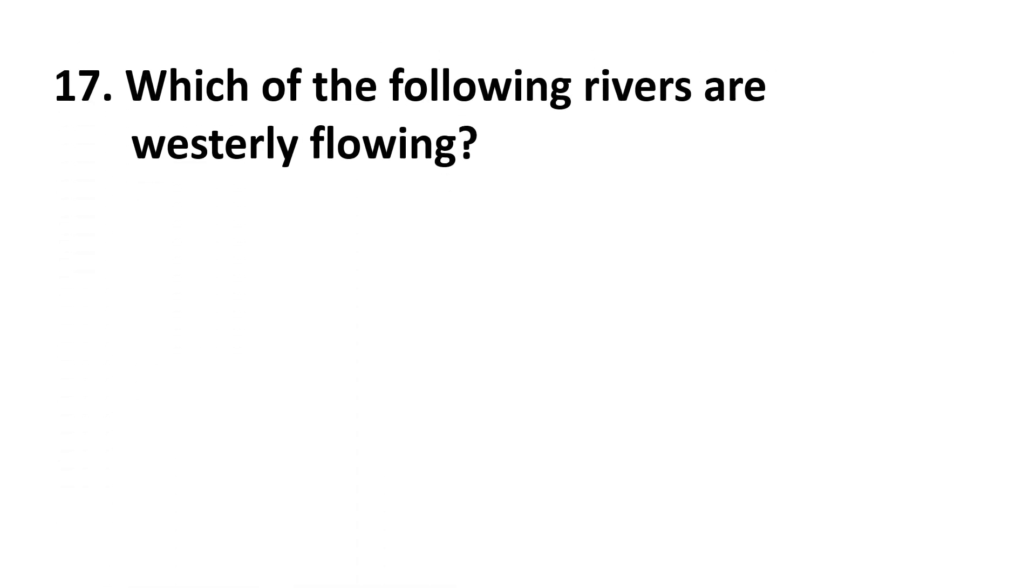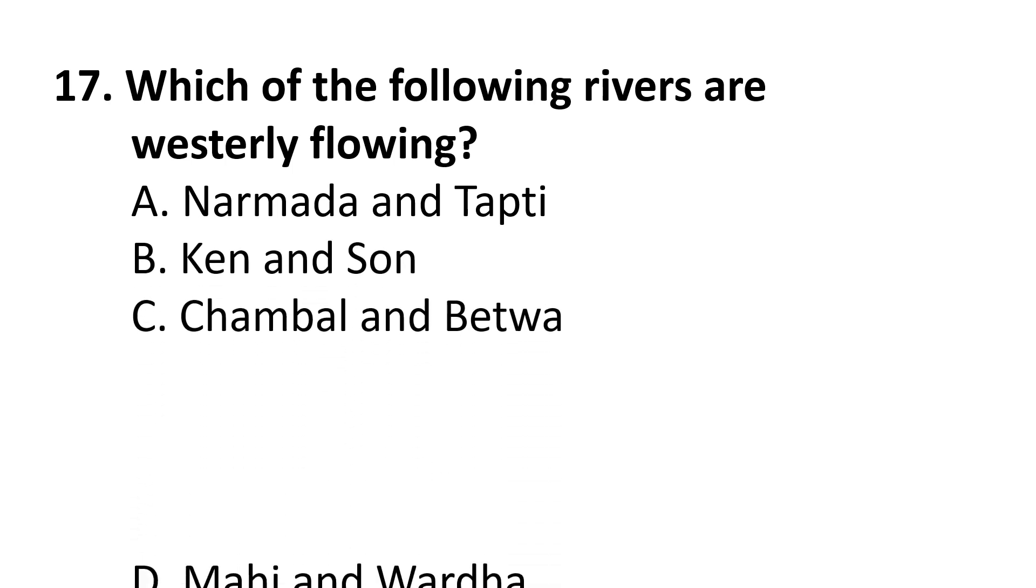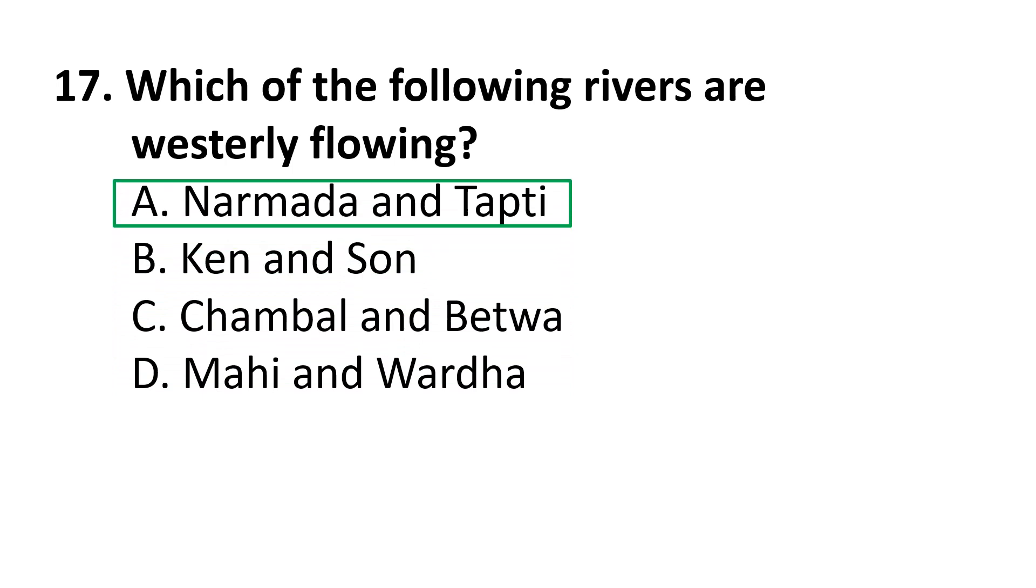17th question: which of the following rivers are westerly flowing? A Narmada and Tapti, B Ken and Soar, C Chambal and Betwa, D Mahi and Wardha. The correct answer is A Narmada and Tapti.